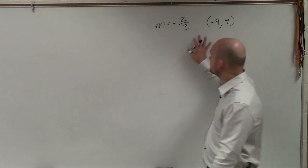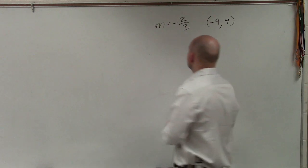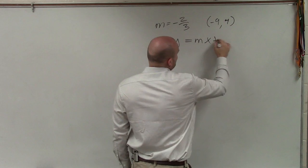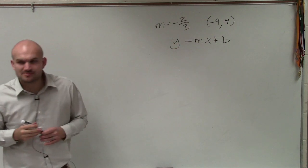So the first thing, here is our information. The next thing we need to understand, well, what exactly is slope-intercept form? Slope-intercept form for an equation is y equals mx plus b.